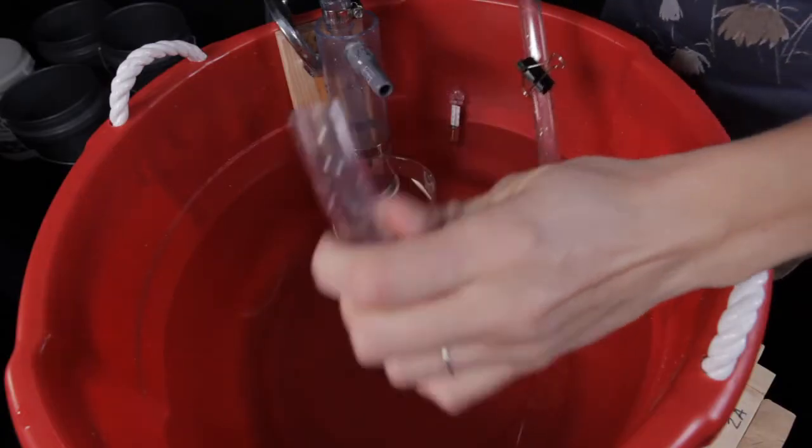The way siphon works is that you want to get all the air out of the tube. So what you want to do is put it all the way under water and let that air bubble out, and then you want to move it around a bit to make sure that you've got all that air out. Just make sure that it doesn't break the surface of the water.